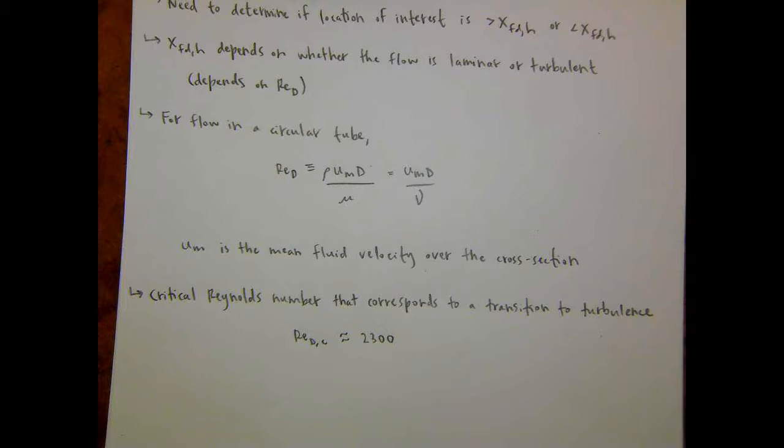Can there be laminar and turbulent flow in the same pipe? Not in the situations we're going to consider. You could have something where laminar flow was developing along a pipe and then an abrupt change in surface roughness triggered a change to turbulent flow, but we're not going to consider conditions like that.